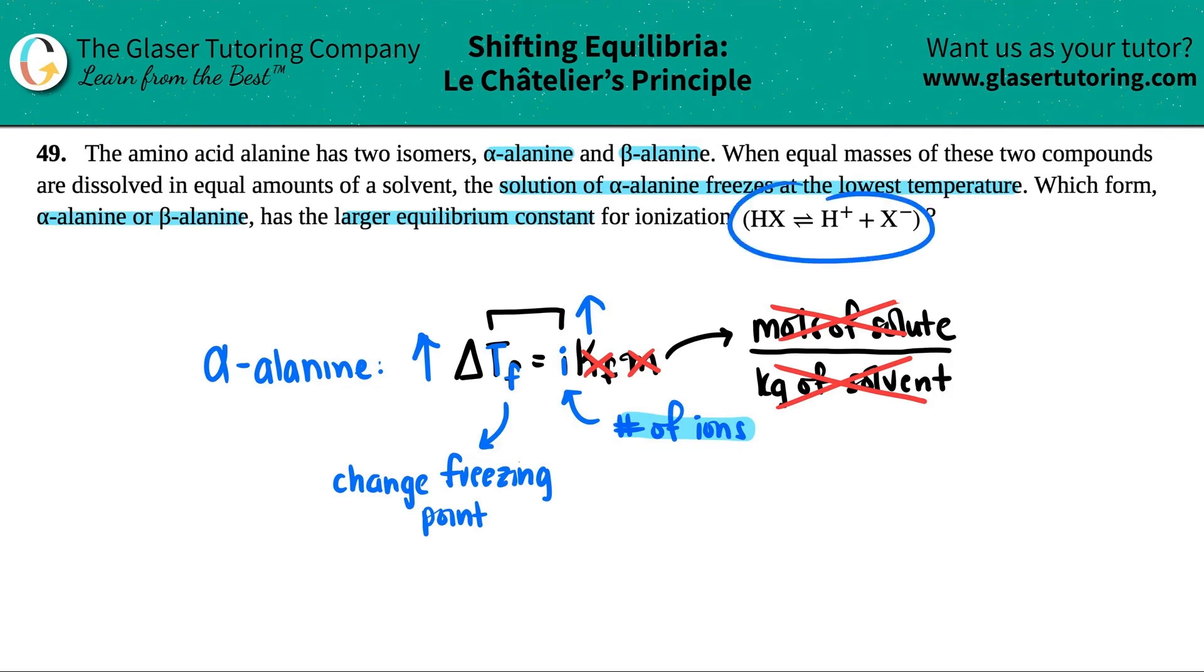That comes back to this idea: these are the ions, and this is either alpha or beta alanine. Now we want to know what has the larger equilibrium constant. A K value has everything to do with products divided by reactants. Since these are ions, they're aqueous. This would be the concentration of H+ raised to the first times the concentration of X-.